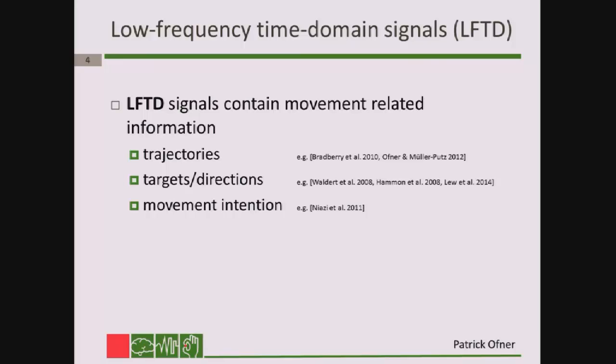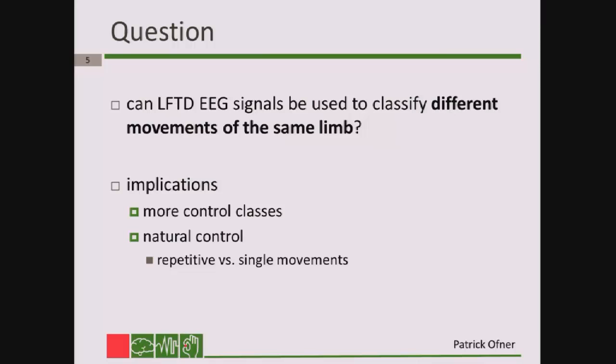But there may be a solution: low-frequency time domain signals. They were shown to encode information about trajectories, movement directions, and movement intention. We analyzed if these low-frequency time domain signals can also be used to classify different movements of the same limb. This has two important implications: first, we would get more control classes, and second, the control would be more natural. For example, the person imagines opening their right hand, and the neuroprosthesis actually opens the right hand — a direct link between imagination and executed movements.